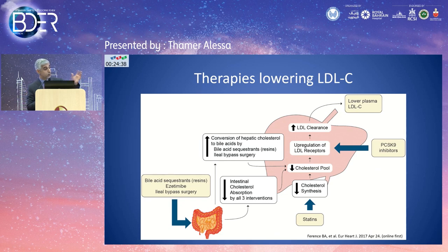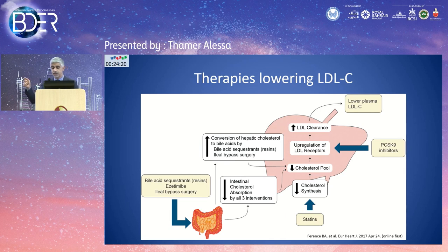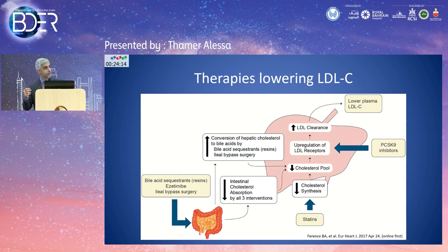Another component comes from different molecules. Ezetimibe works in the gut — it blocks reabsorption of cholesterol coming back to the liver via bile, depleting the hepatic cholesterol pool, which upregulates LDL receptors and lowers LDL. PCSK9 inhibitors, used for several years now, maintain LDL receptors by stopping their degradation, making them much more available at the surface of hepatocytes, thereby lowering LDL.